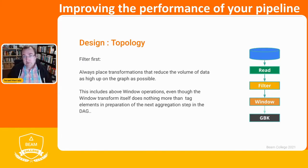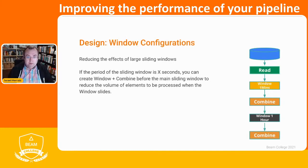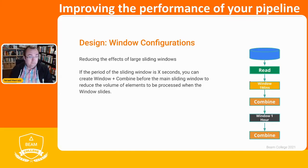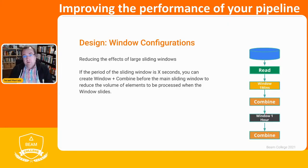If you put less data into the window, that's better — less resources are used. If you're going to be applying large windows, try to reduce the data if the logic allows. For instance, here we have different combines and we're applying different windows in the same pipeline — this is perfectly fine in Apache Beam. If we can reduce the size of the input for the large window, that's much better than trying to do it afterwards.